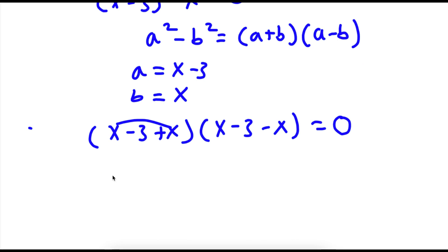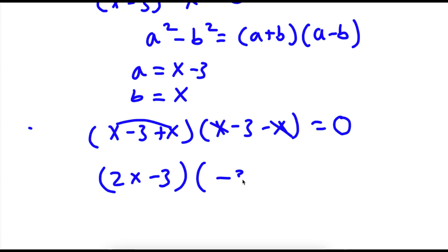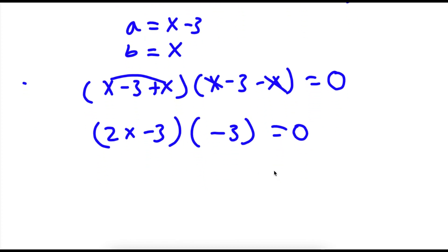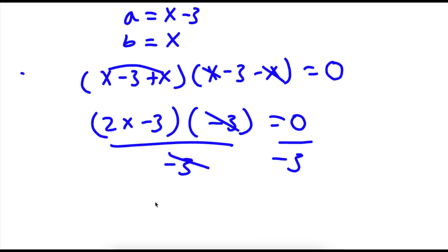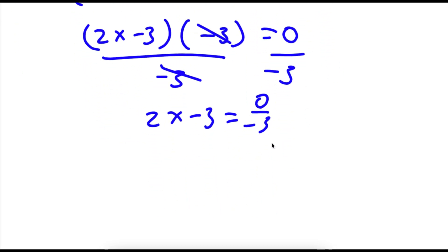Now x plus x is 2x. So now I have 2x minus 3 times — these two cancel out — simply negative 3, is equal to 0. Now if I divide both sides by negative 3, these two cancel out and I have 2x minus 3 is equal to 0 over negative 3. Now 0 divided by any number is 0, so I'm simply left with 2x minus 3 is equal to 0.